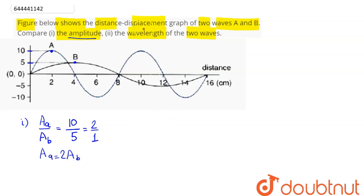We can say wavelength of A to wavelength of B can be written out from the graph. Wavelength is the time taken to complete one oscillation, so